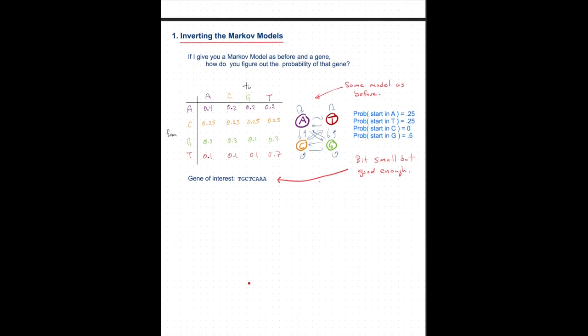Now we have an important concept: inverting a Markov model. Before, we were given a Markov model and walked probabilistically through it to generate a sequence of states. But what if somebody gave you a sequence — like TGCTCAAA — and asked: relative to a given model, what is the probability of this sequence? This is exactly the same model as before, so make sure you understand the question being asked.